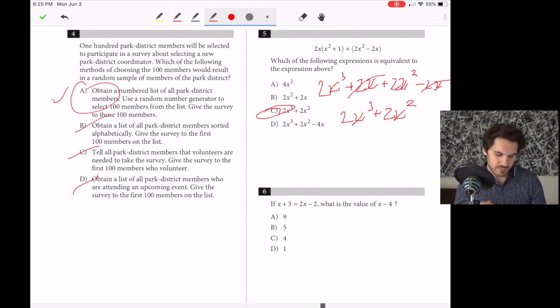Number six, if x plus 3 equals 2x minus 2, what is the value of x minus 4? We need to find x first. Add 2 to each side, subtract x from each side, so 5 equals x. But we're not done yet. x minus 4 is 5 minus 4, which is 1.